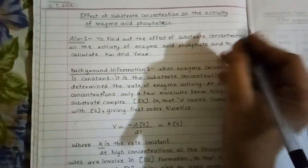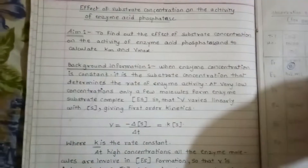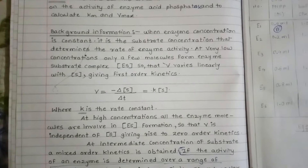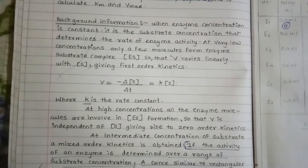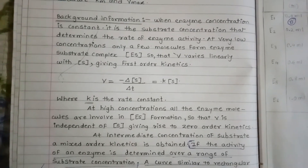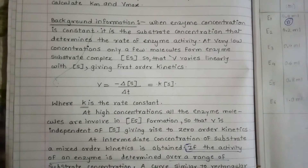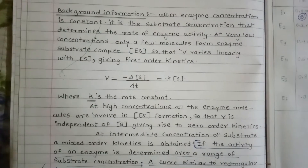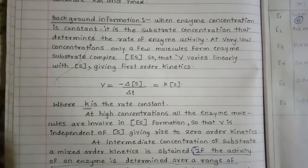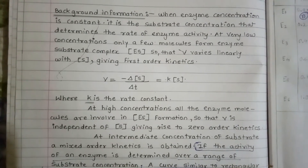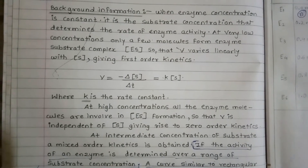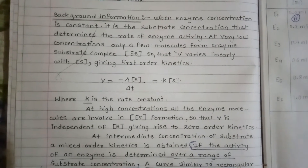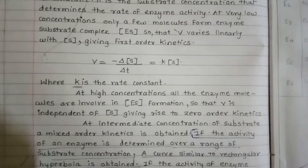The enzyme source we are using is potato extract, and we will be calculating Km and Vmax. When enzyme concentration is constant, it is the substrate concentration that determines the rate of enzyme activity. At very low substrate concentrations, only few enzyme molecules bind to the substrate forming enzyme-substrate complexes. When substrate is in ample amount and all enzyme molecules are bound, a steady reaction rate is reached, producing a rectangular hyperbolic graph.